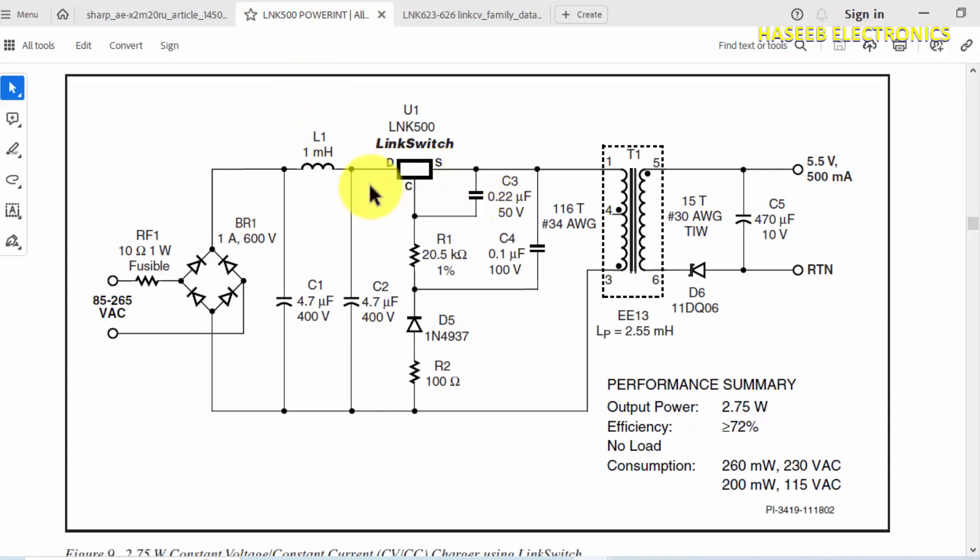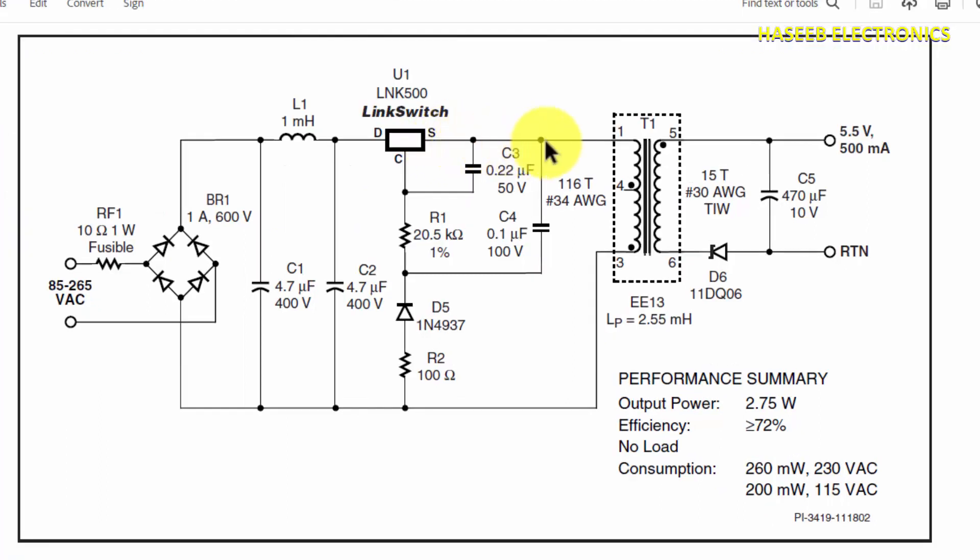But now compare here. LNK500 IC positive voltage is here at this capacitor, then there is a filter coil connected between the second capacitor. After this coil, the voltage is reaching directly to the drain pin. Then the source pin is driving the transformer, and the transformer primary winding's second end is connected to ground.